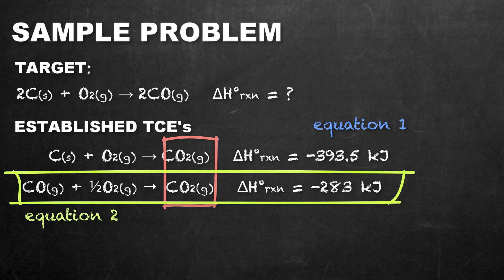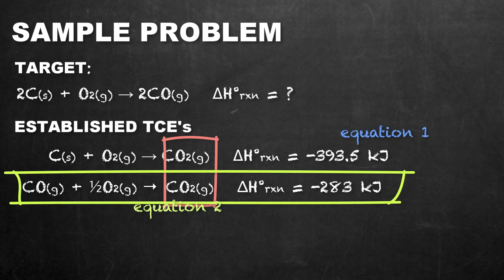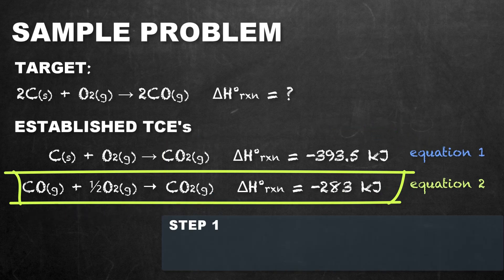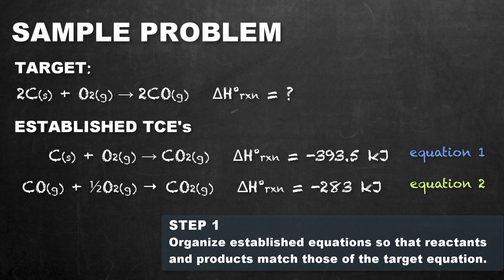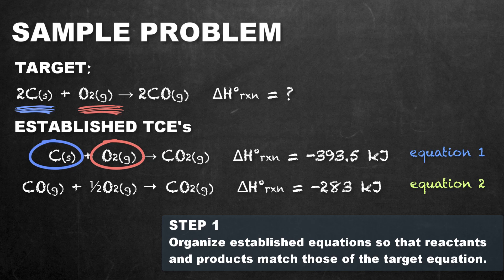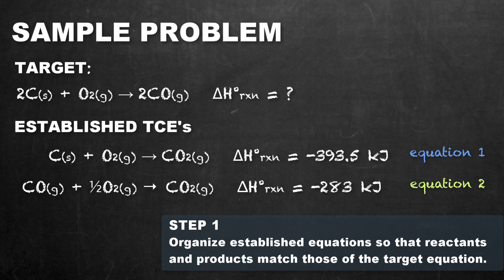Notice we don't need carbon dioxide in the target — that will come into play later. Our first step is to rearrange these equations so that reactants are on the reactant side and products are on the product side. In equation 1, carbon and oxygen are both on the reactant side, just as needed. In equation 2, carbon monoxide is on the reactant side, which is opposite of what we need.